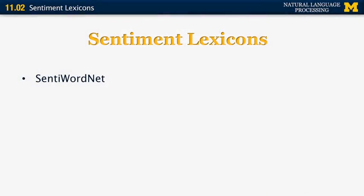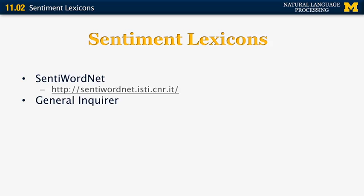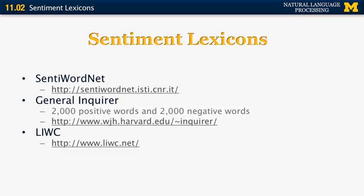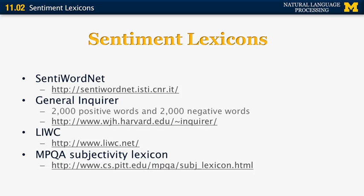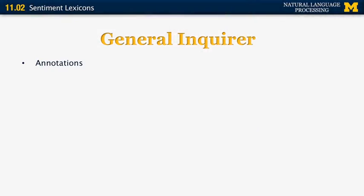The next segment is about automatically building sentiment lexicons. There are some manually built sentiment lexicons such as SentiWordNet, the General Enquirer, LIWC, and the Multi-Perspective Question Answering Subjectivity lexicon, which are used a lot in research on sentiment analysis. It is also important to learn sentiment lexicons automatically, whether in English, in a specific domain, or in a foreign language.